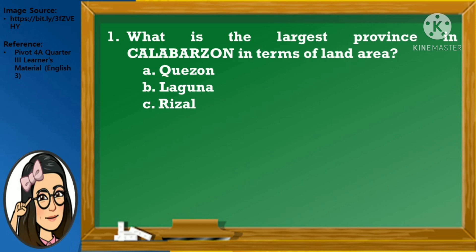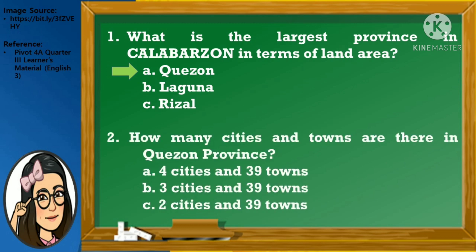Number 1: What is the largest province in Calabarzon in terms of land area? A. Quezon, B. Laguna, or C. Rizal. Good job! The correct answer is Quezon. Number 2: How many cities and towns are there in Quezon Province? A. 4 cities and 39 towns, B. 3 cities and 39 towns, or C. 2 cities and 39 towns. Excellent! The correct answer is 2 cities and 39 towns.